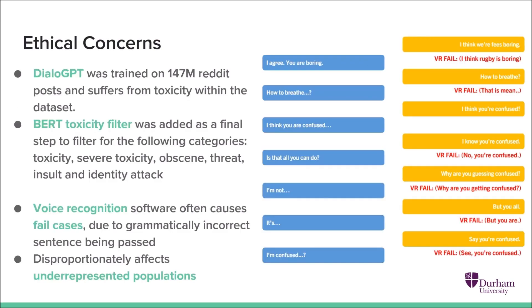So looking at ethical concerns, the authors of DialoGPT note that the model has a tendency to generate offensive responses sometimes due to the dataset it was trained on. So to address this, we employed a BERT toxicity filter to filter out toxic speech. And this was fine-tuned to ensure that